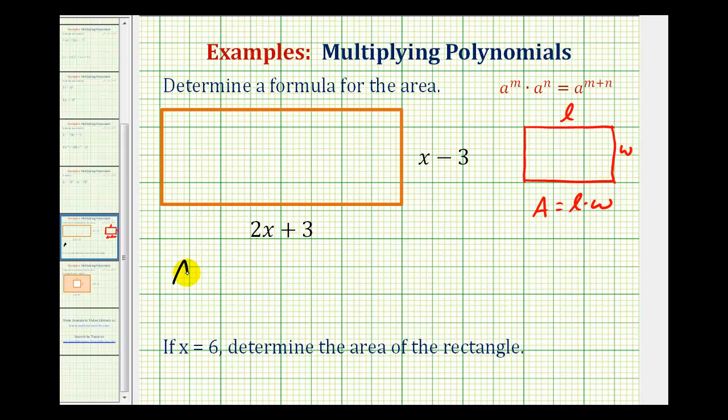So for our rectangle, the area is going to be equal to the quantity 2x plus 3 times the quantity x minus 3. So this is the formula to determine the area of this rectangle. Let's go ahead and determine this product.